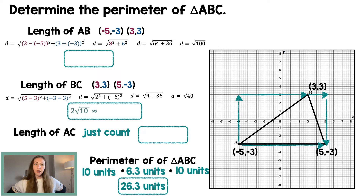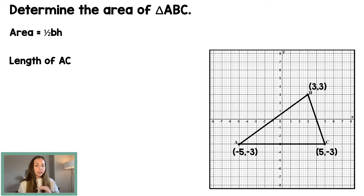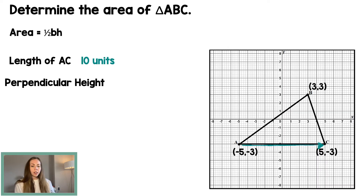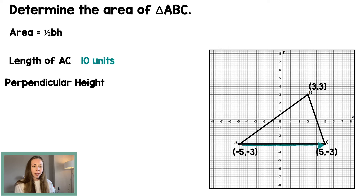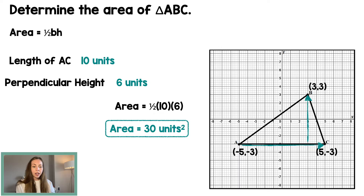Now we're going to find the area of triangle ABC. The area of a triangle is one-half base times height. AC is our base, and we already know that the length of AC is 10 units long. Then we're interested in the perpendicular height. If you come straight down from point B, making a perpendicular line meeting your base, that length is 6 units long — since it's vertical, you can just count it out. So we do one-half times 10 times 6, which is half of 60, which is 30 square units.